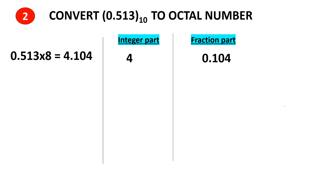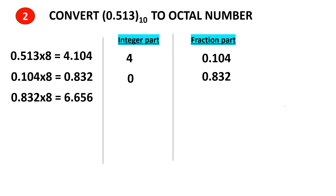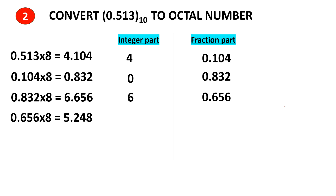Take the fraction part 0.104 and multiply by 8 and you get 0.832. Here 0 is the integer part and 0.832 is the fraction part. Take the fraction part and multiply by 8 and you get 6.656. So 6 is the integer part and 0.656 is the fraction part. Again take the fraction part and repeat this process until the fraction part becomes 0.